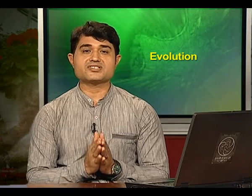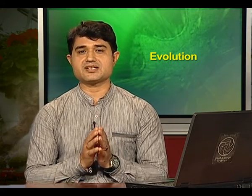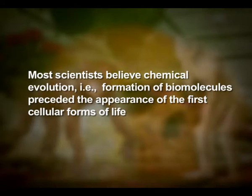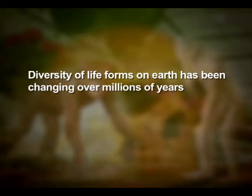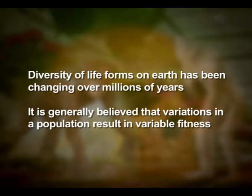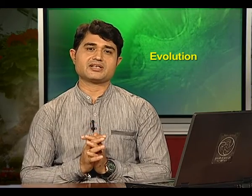We can conclude that the origin of life on earth can be understood only against the background of the origin of the universe, especially earth. Most scientists believe chemical evolution — that is, the formation of biomolecules — preceded the appearance of the first cellular forms of life. The subsequent events are a conjectured story based on Darwinian ideas of organic evolution by natural selection. Diversity of life forms on earth has been changing over millions of years. It is generally believed that variations in a population result in variable fitness, and phenomena like habitat fragmentation and genetic drift may accentuate these variations, leading to appearance of new species, hence evolution.